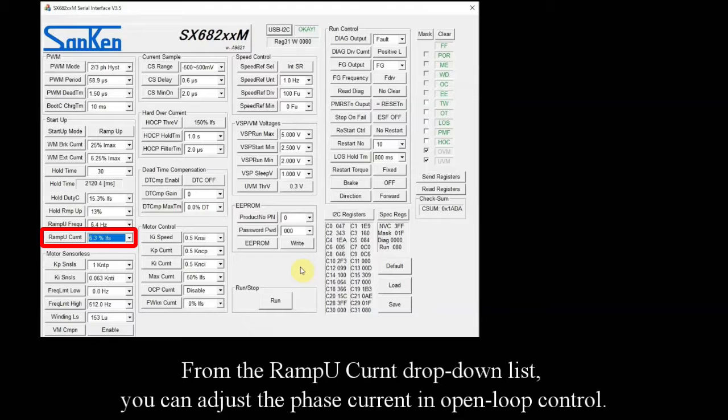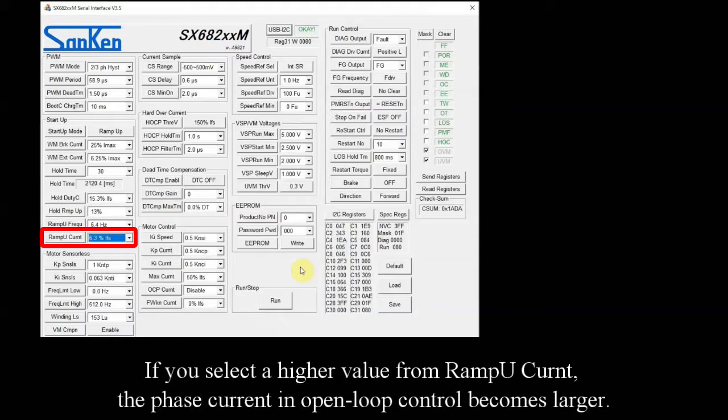From the ramp up current dropdown list, you can adjust the phase current in open loop control. If you select a higher value from ramp up current, the phase current in open loop control becomes larger.